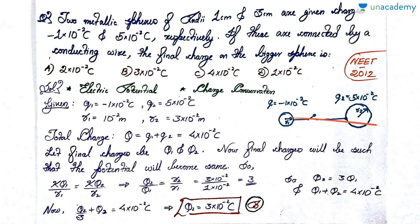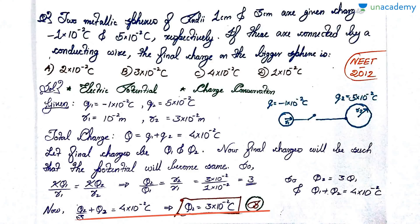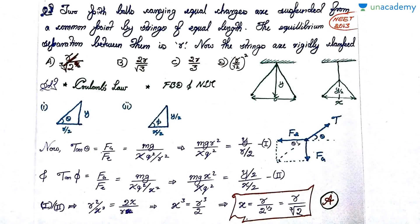Current flows until the potential in both conductors becomes equal. Equating potentials: kq1/r1 = kq2/r2, so q2/q1 = r2/r1 = 3. You now have two equations: q2/q1 = 3 and charge conservation q1 + q2 = 4 times 10 to the minus 2. Solving these two equations, q2 — the charge on the larger sphere — equals 3 times 10 to the minus 2 coulombs. Option B is the correct answer.